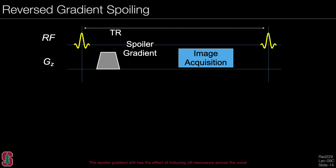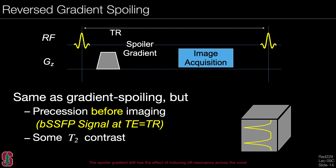We can apply the spoiler gradient before image acquisition. At first glance it seems there would be no signal because the gradient dephases it, but this is the same as gradient spoiling — just applying the precession before imaging. This is like sampling the balanced SSFP signal just before the RF, or at TE equals TR. This provides some additional T2 contrast compared to normal gradient spoiling. We have taken that signal, compressed it into a voxel, and taken the average.